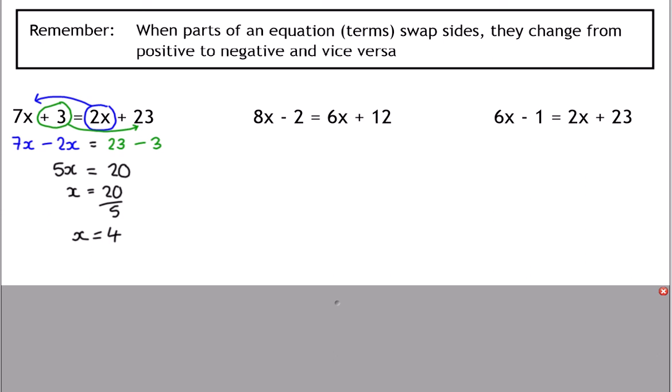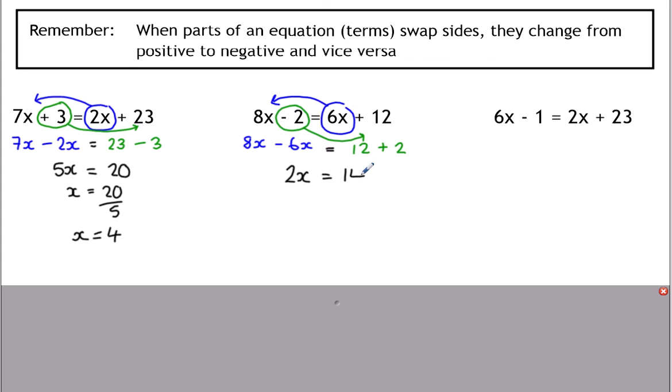Now for the next one, I'm going to move the 6x over there, because it's easier to do 8 take away 6 than 6 take away 8. So 8x take away 6x. That means I've got to move this minus 2 to the right — the opposite of minus 2 is adding 2. So 12 was already there, then add 2. That gives us, tidying it up, 2x equals 14. And all I've got to do now is divide by 2. So the answer is 7.